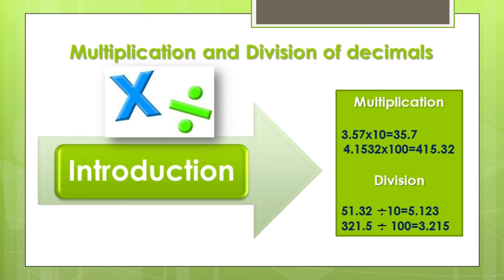Now second is division. Division में बिल्कुल इसके उलट करना है। जैसे 51.32 divided by 10 — decimal point को जितने 0 होंगे, उतना ही left की तरफ move कराना है। 10 में one zero है, तो one digit left move कराएंगे। Answer होगा 5.132। Second example: 321.5 divided by 100 — 100 में two zeros हैं, तो left side को two digits decimal move कराएंगे। Answer होगा 3.215। याद रखें: multiplication में decimal right side move होता है, और division में left side।